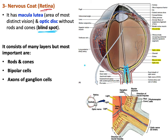Lateral to the blind spot is a small yellow area called the macula lutea. In the center of the macula lutea there is a small depression called the fovea centralis — the area of highest acuity and color vision. This is for central vision: when you look at someone, their face is formed here.